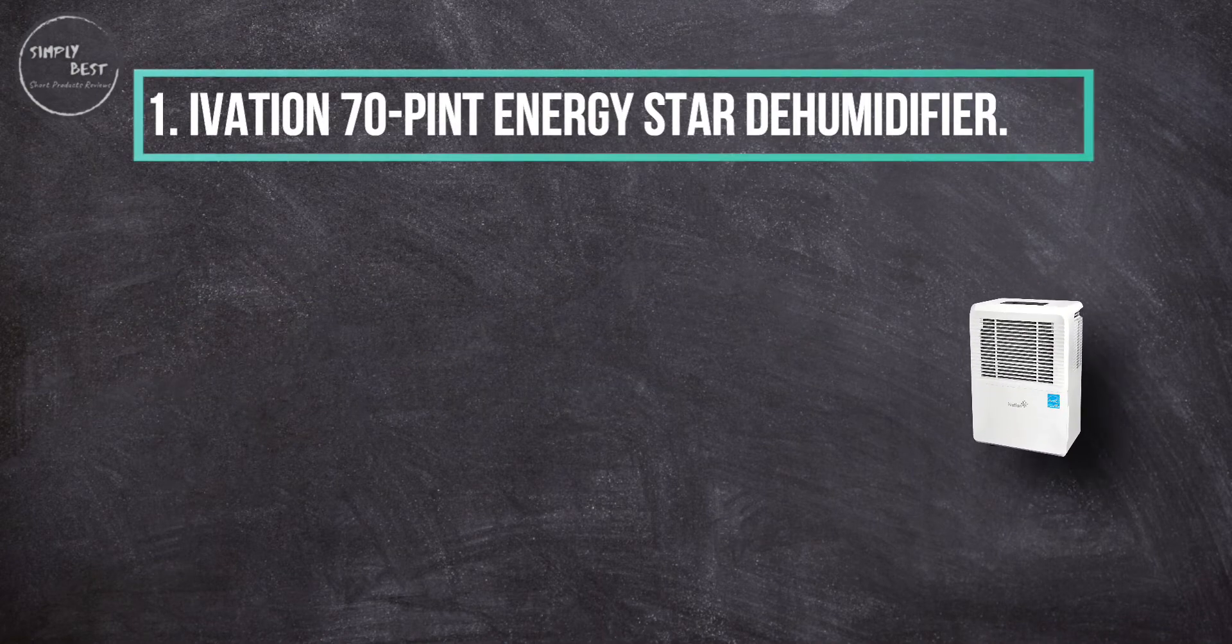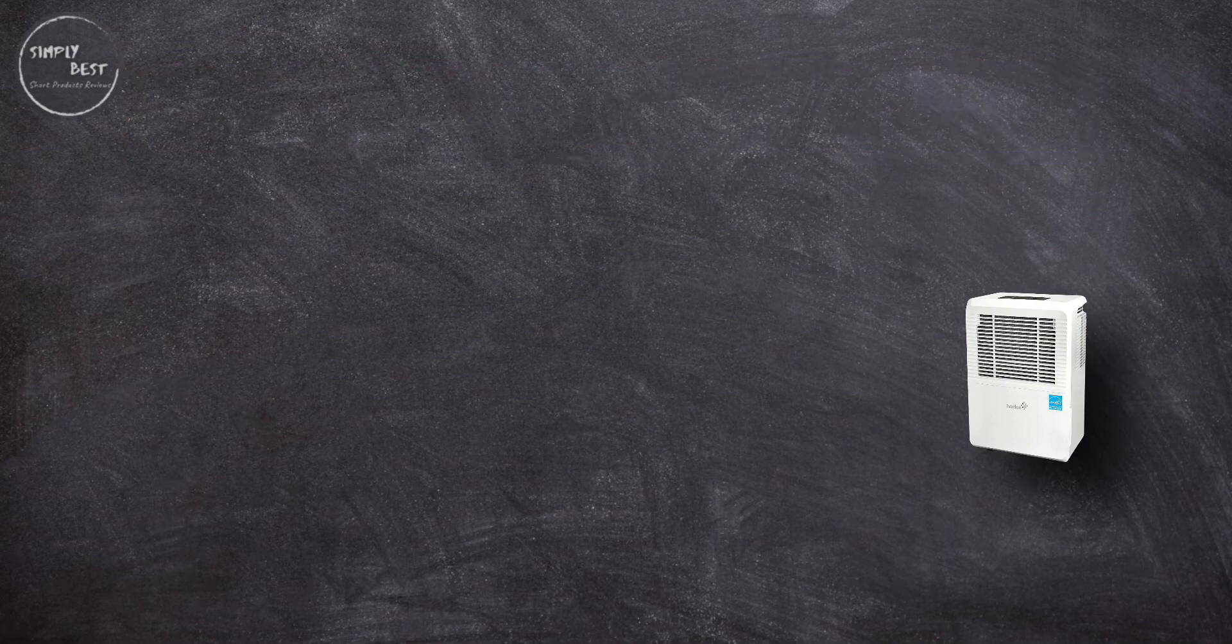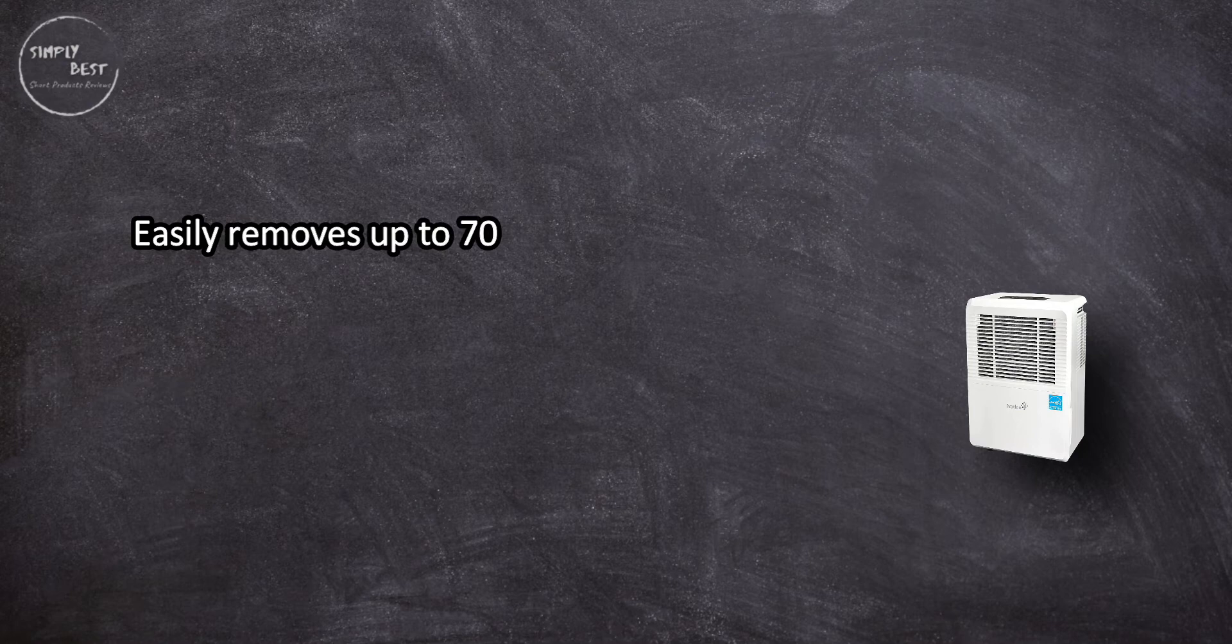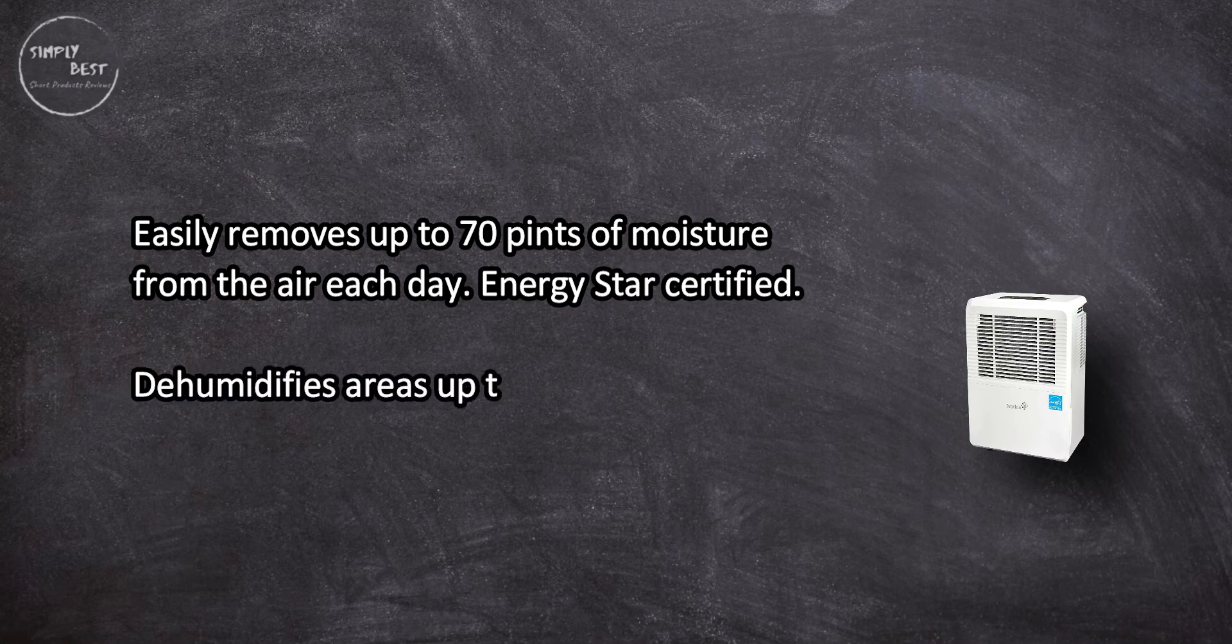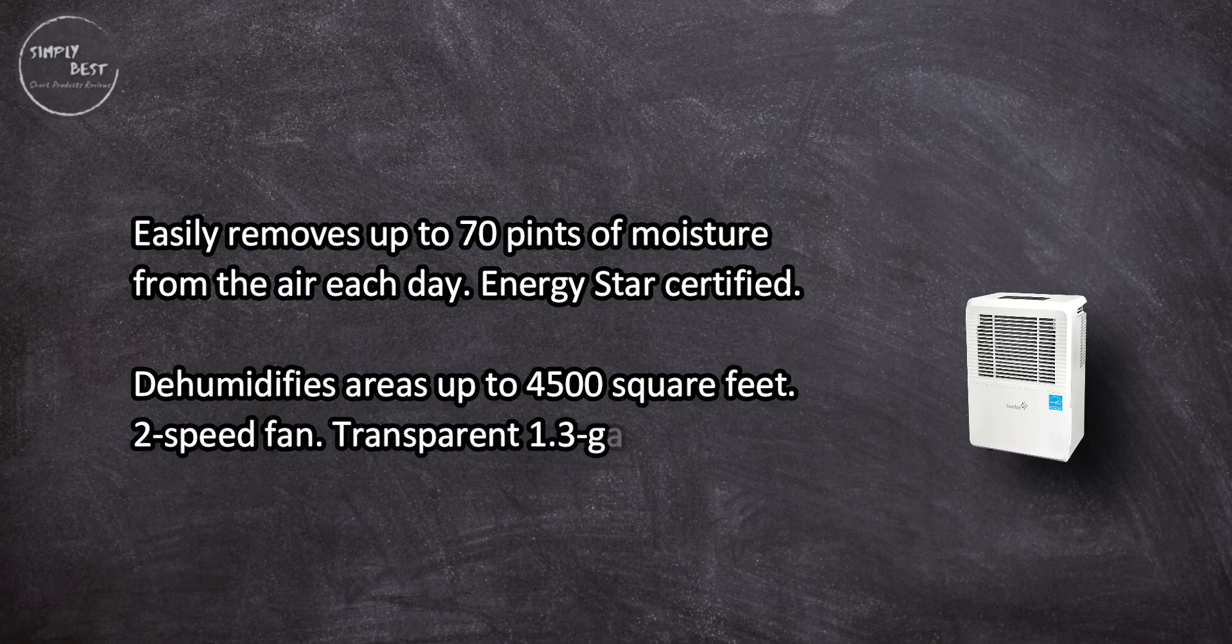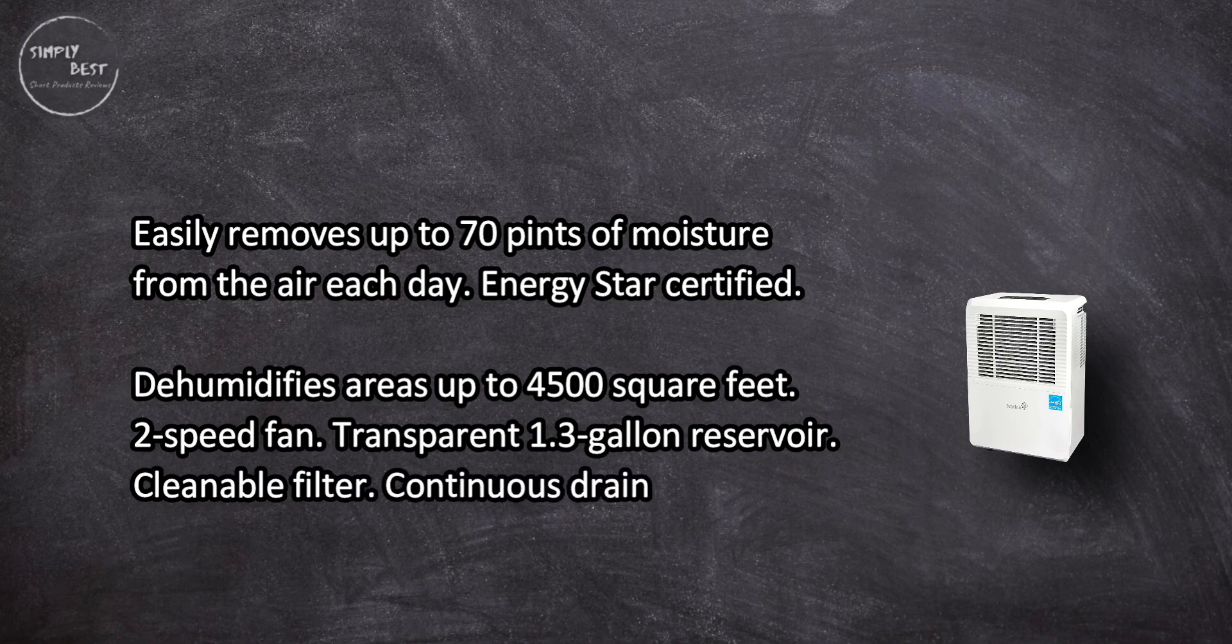At number one, IVATION 70 Pint Energy Star Dehumidifier. Easily removes up to 70 pints of moisture from the air each day, Energy Star certified, dehumidifies areas up to 4,500 square feet, two-speed fan, transparent 1.3 gallon reservoir, cleanable filter, continuous draining option with hose.